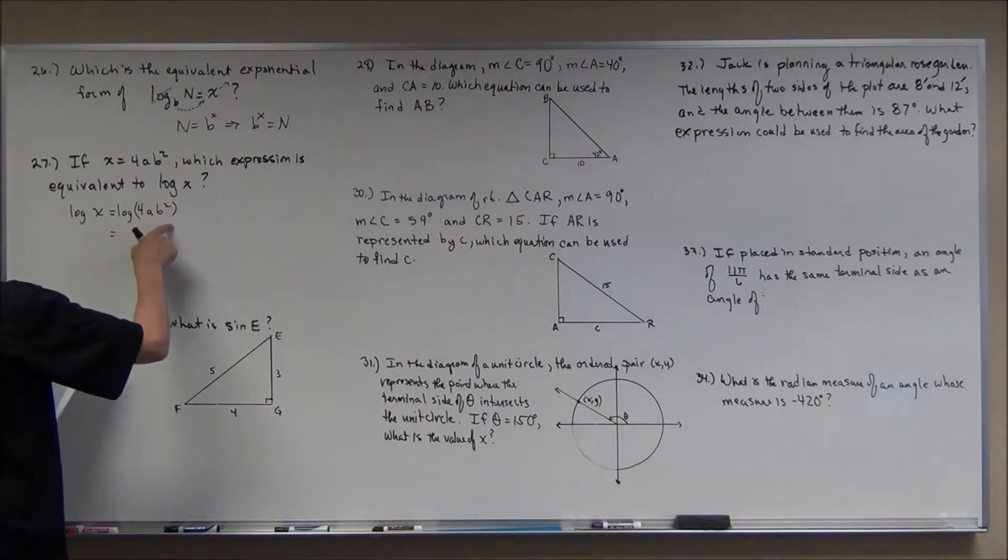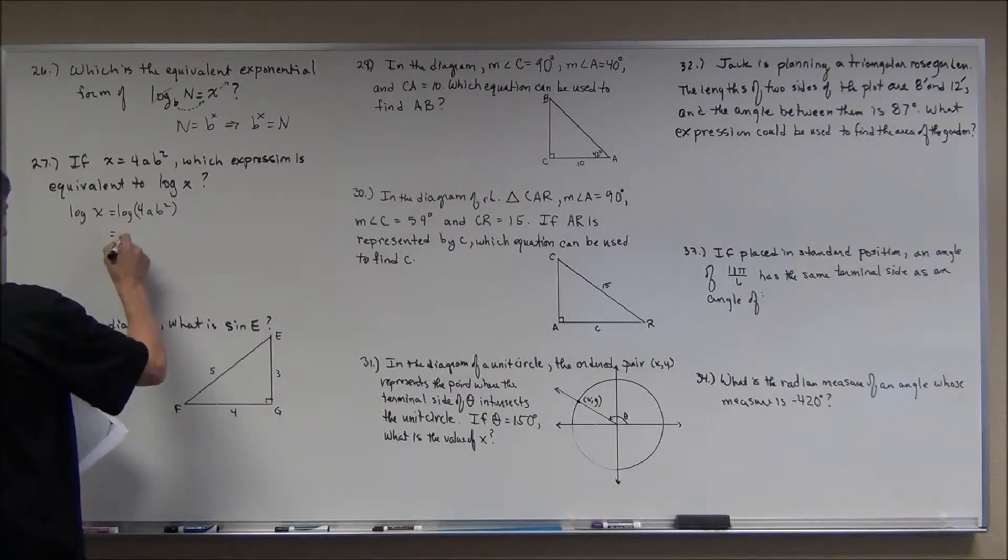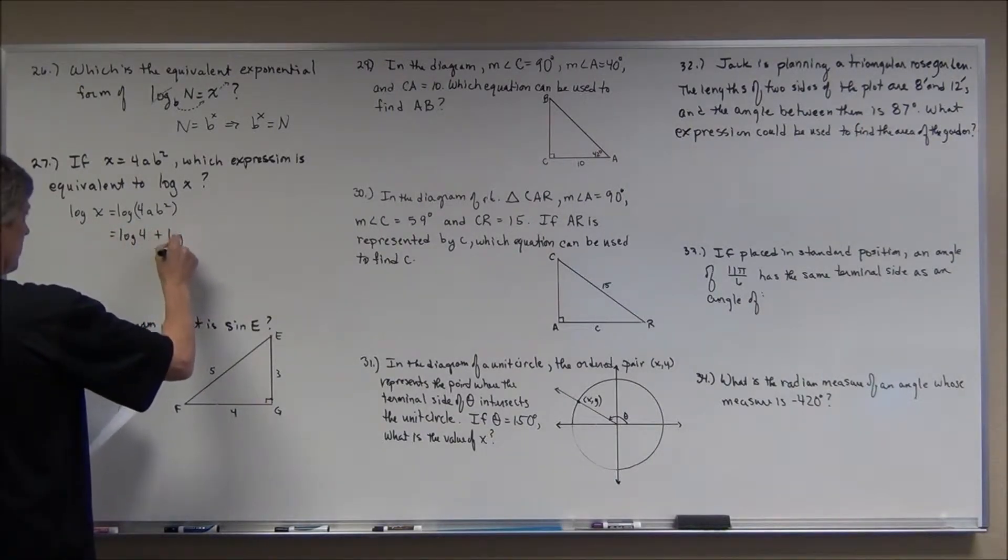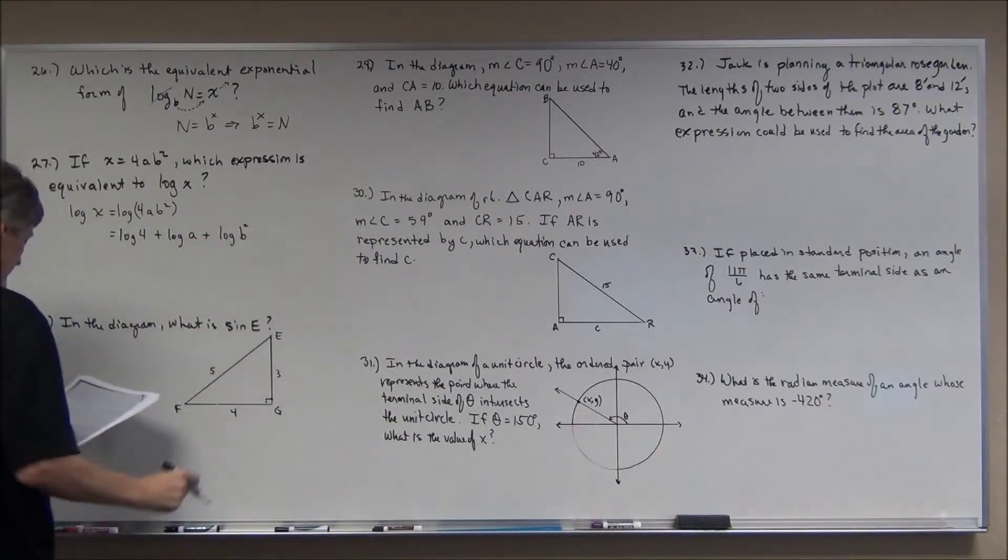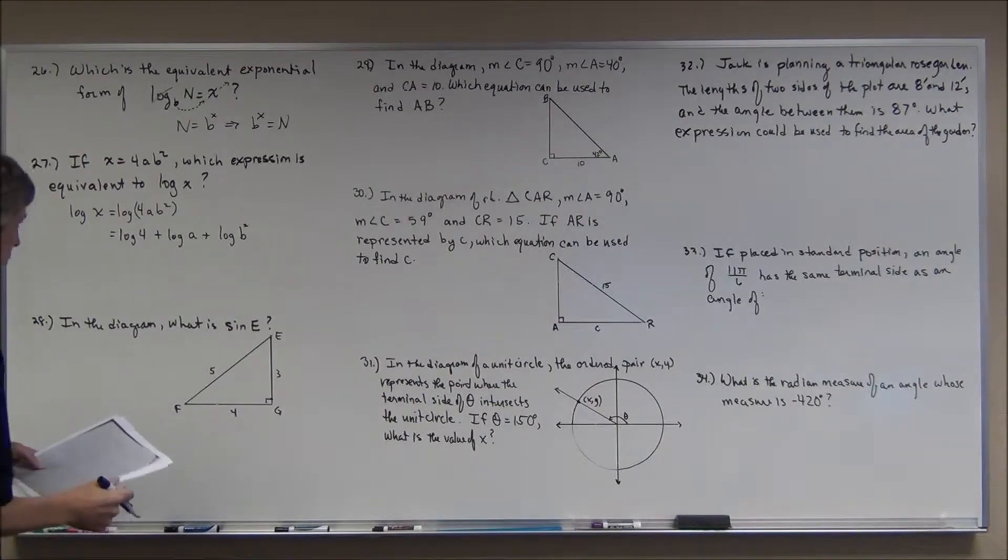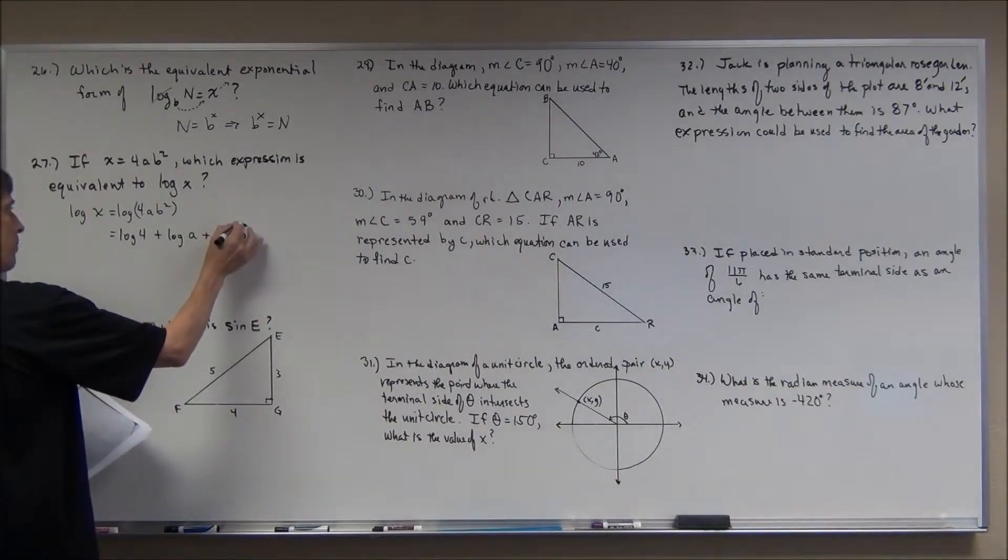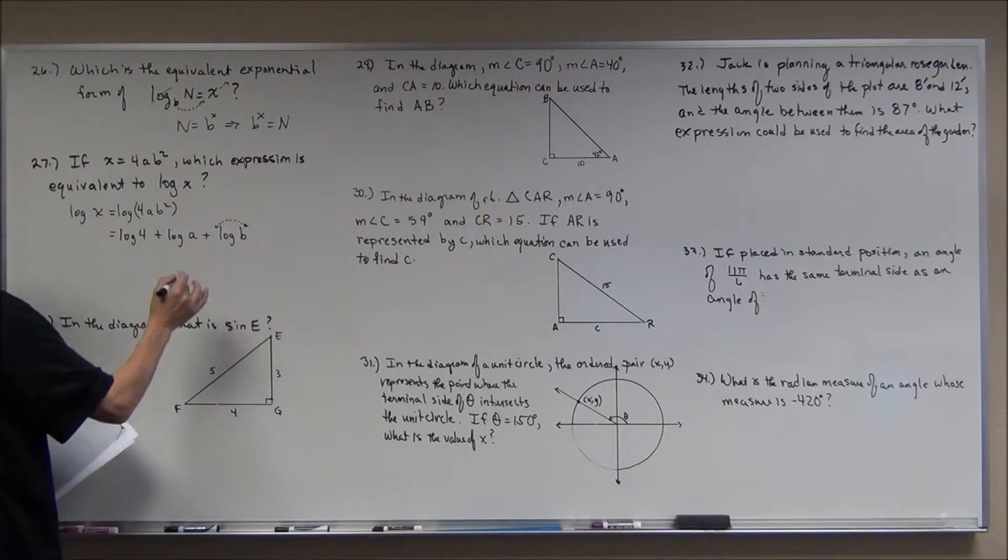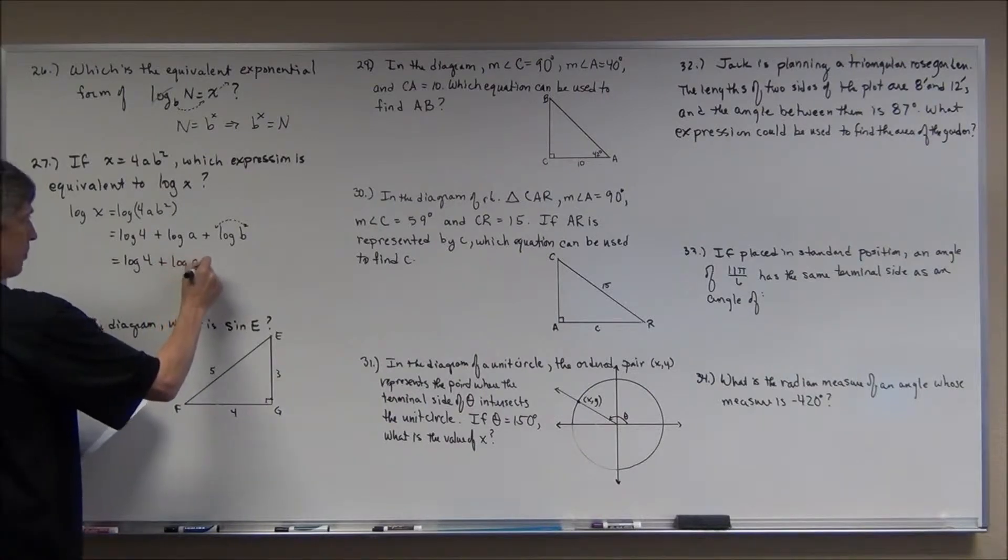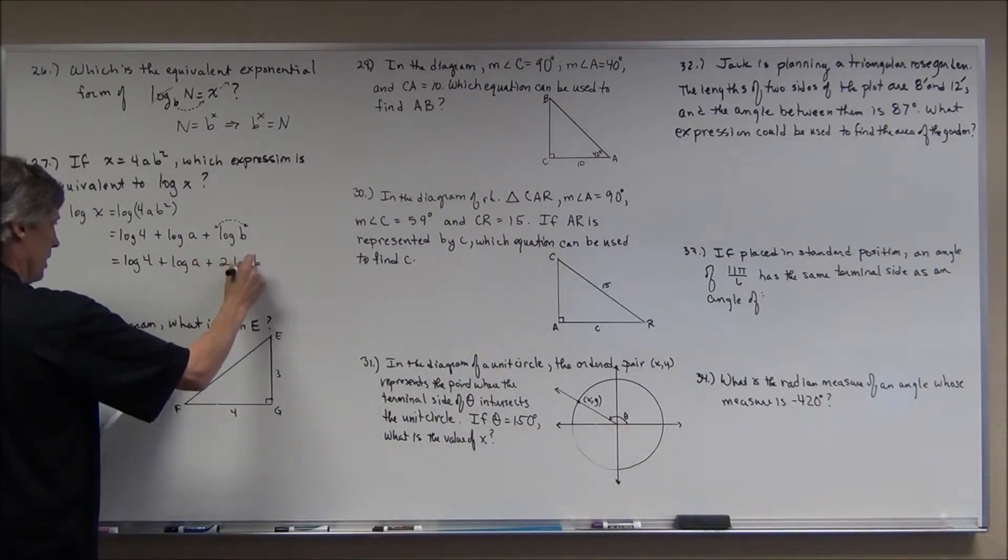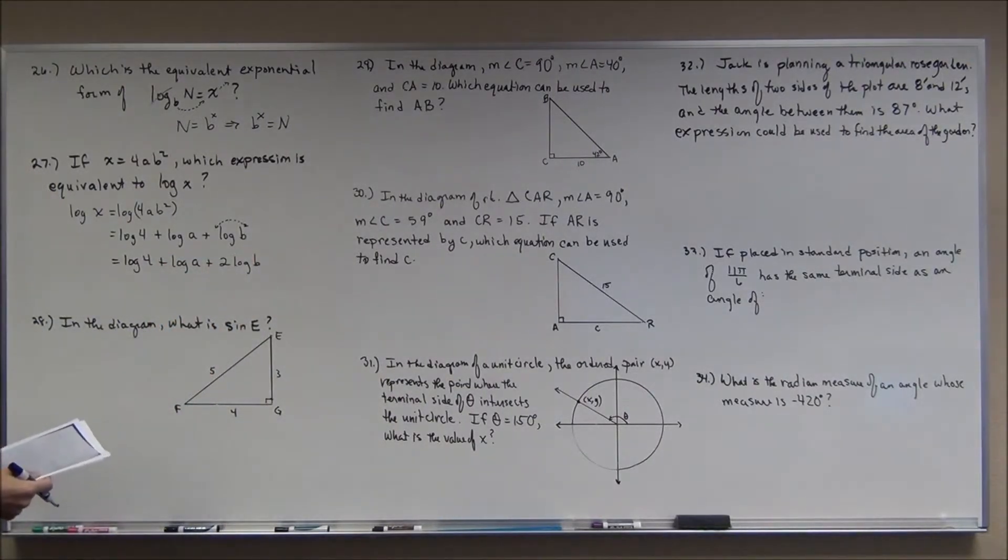I'm going to use the first property that says that the log of a product is the sum of the logs of those factors. Now, you look there and you say, I don't see any b squareds. Well, that's where they use the third property, which I've already used in a previous problem. And you bring that as a factor out in front. So this is log of 4 plus the log of a plus 2 log of b. And let's see if that matches any of them. It looks like it matches the last one there.